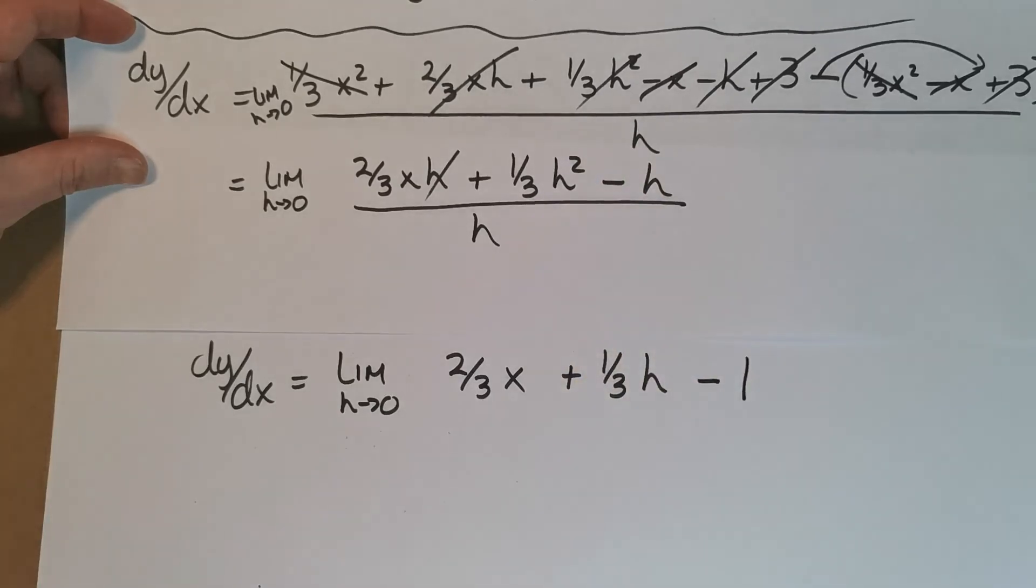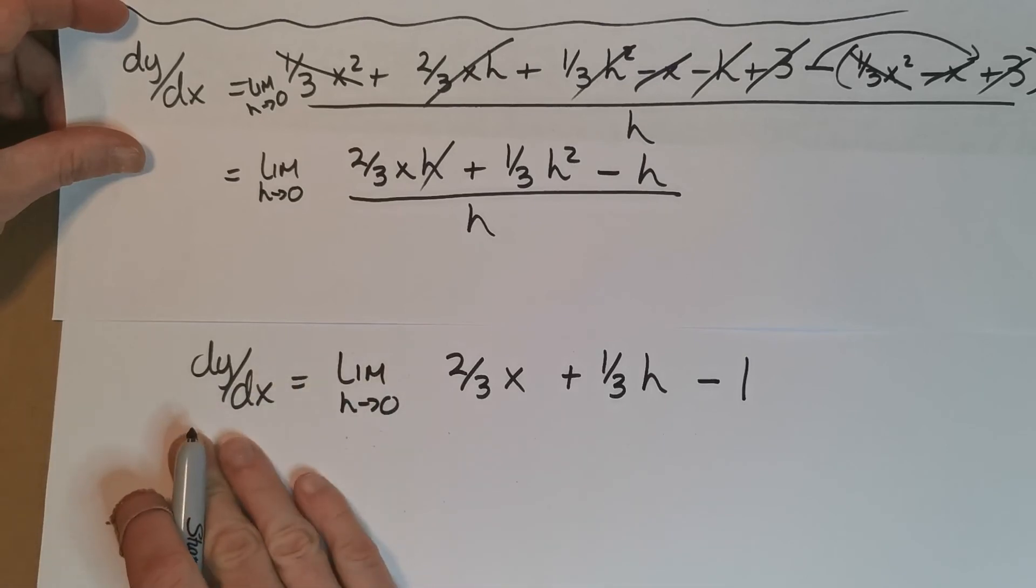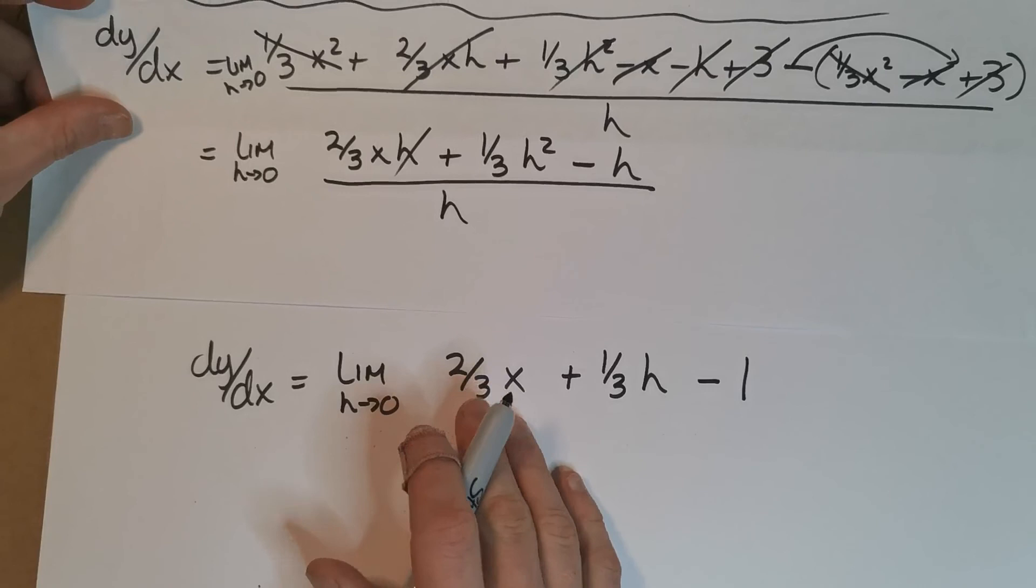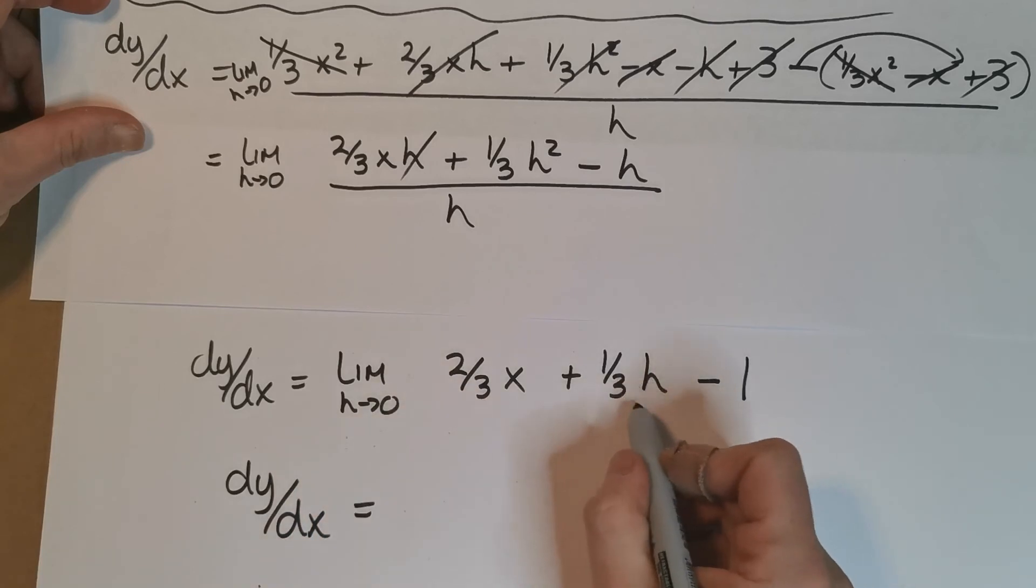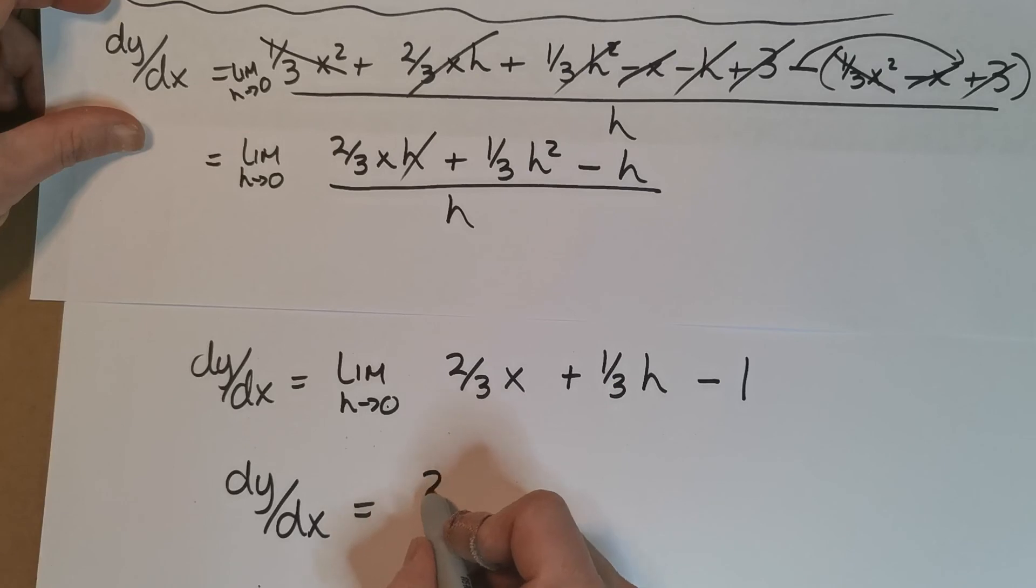Now when I look at this, I can take my limit as h goes to zero because I've tidied this fraction up as much as I can. So when I want to tidy this up, I can say dy/dx—I can take my limit. The only limit term that has an h is this, so if h goes to zero it knocks out that, leaving me with just (2/3)x and a minus one. And that is the answer.